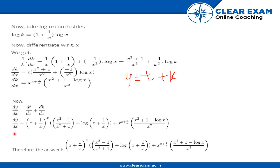dy/dx equals (x + 1/x)^x times [(x² - 1)/(x² + 1) + log(x + 1/x)] plus x^(x + 1/x) times (x² + 1 - log x) all upon x².